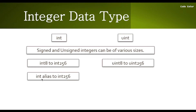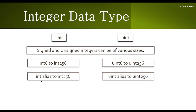int is an alias to int256 and uint is an alias to uint256. So if you write 'int num = 5', you are actually writing 'int256 num = 5'. In the same way, if you write 'uint num = 1', you are actually writing 'uint256 num = 1'.